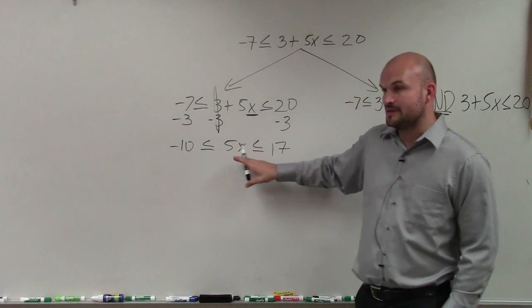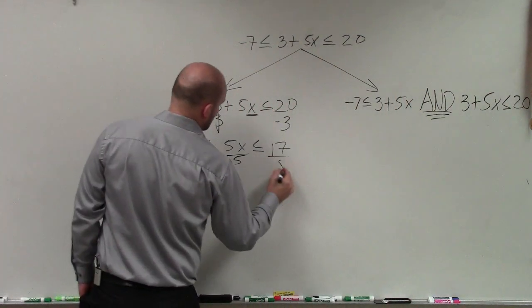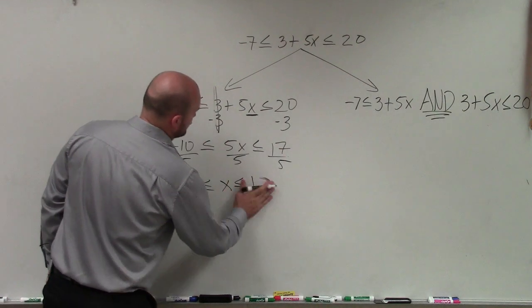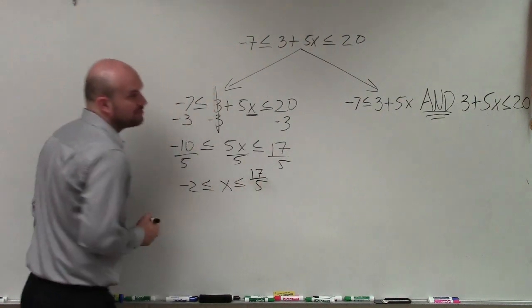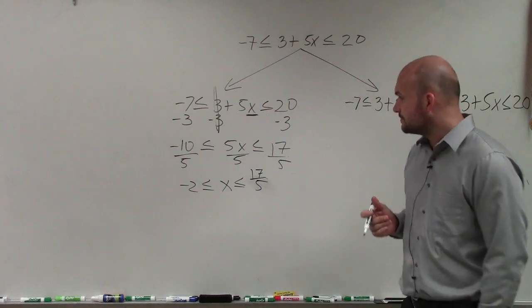Now I see my 5 is being multiplied by x, so I divide by 5. So therefore, I have -2 ≤ x ≤ 17/5, which is approximately 3.4. All right?